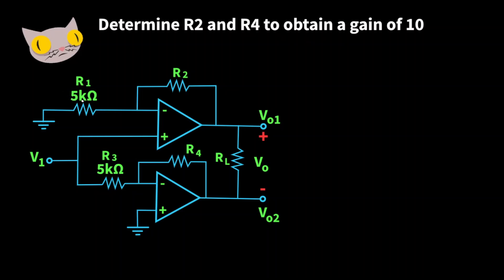R1 is 5k ohms, R3 is also 5k ohms. Let's start by finding the value of R2. We can find this by considering the gain provided by the top op amp.